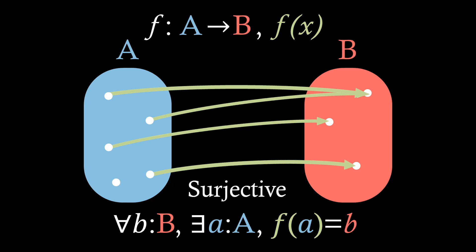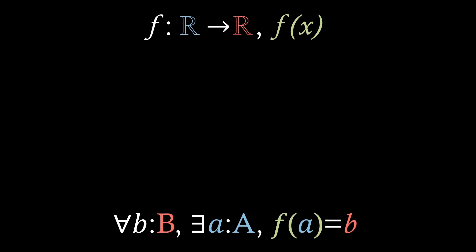Let's now consider some examples of this. If we imagine a function from the real values to the real values, also known as the Cartesian plane, with our domain being the x-axis and our codomain being the y-axis.